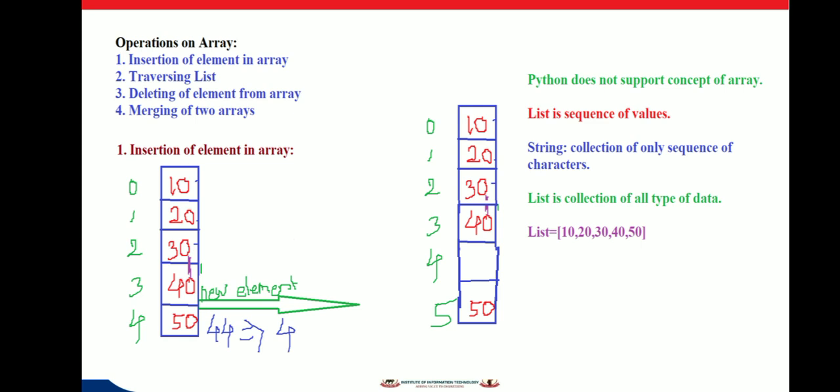After inserting an element, the array size is incremented by 1. Here we have an array of size 5, where 0, 1, 2, 3, 4 are the indices, and 10, 20, 30, 40, 50 are the elements.